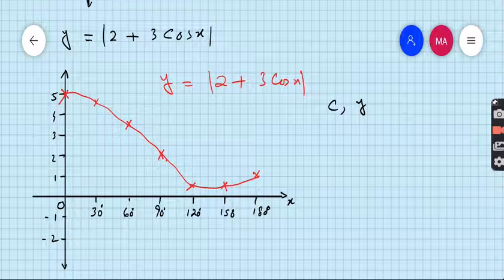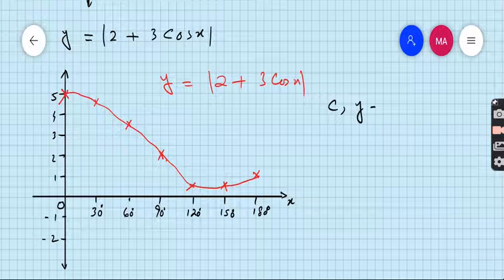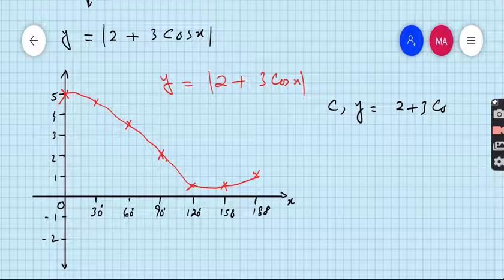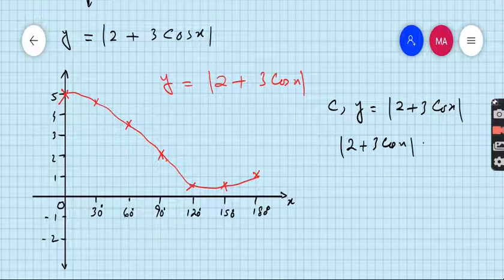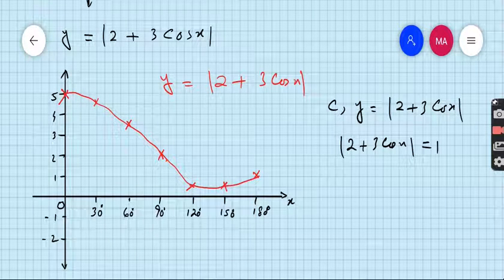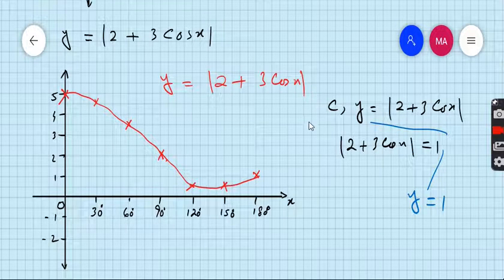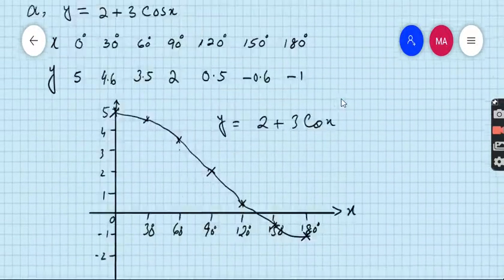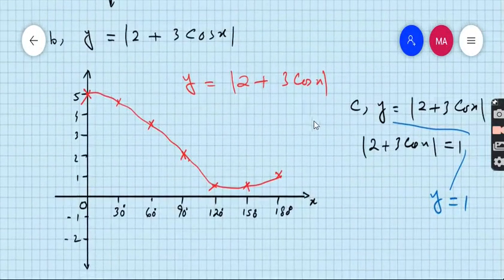Our question is y equals 2 plus 3 cos x, and the requirement is 2 plus 3 cos x equals 1. So we have to draw a line y equals 1, because if you compare both equations you will get y equals 1. Draw the line y equals 1 on this graph.